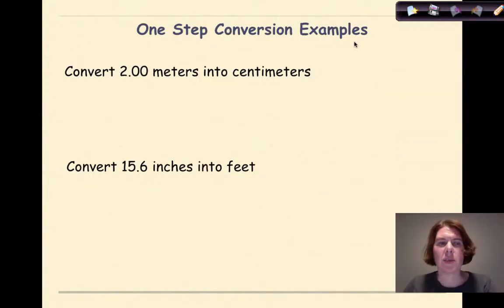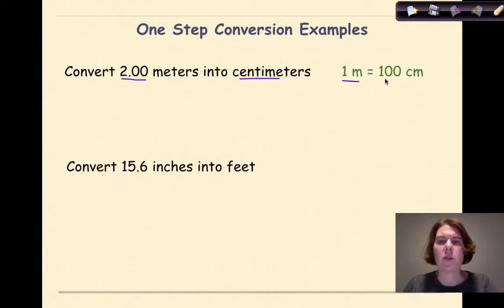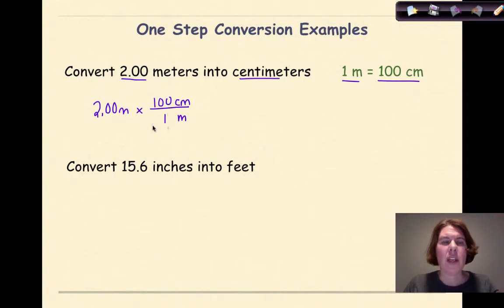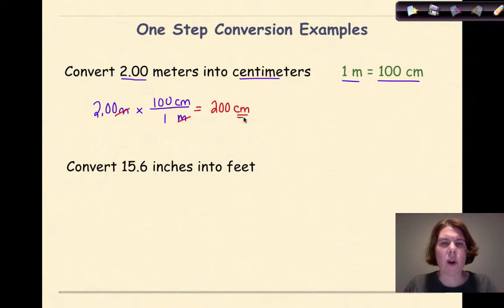Let's look at a one-step conversion example: convert 2.00 meters into centimeters. I need a meters-to-centimeters conversion factor — one meter equals 100 centimeters. I write down my given, 2.00 meters, then a multiplication sign and a line. Meters goes on the bottom, centimeters on the top. I know there are 100 centimeters in one meter. Meters cancels meters, and my final answer is 200 centimeters. I'm ending with the unit I want, and my math makes sense.